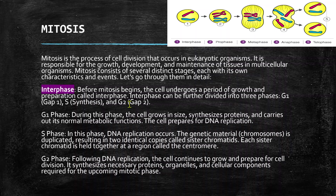Each chromatid is held together at a region called the centromere. In G2 phase, following DNA replication, the cell continues to grow and prepare for cell division. It synthesizes necessary proteins, organelles, and cellular components required for the upcoming mitotic process.